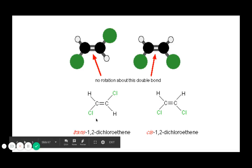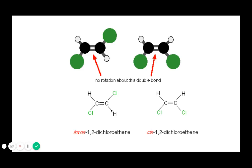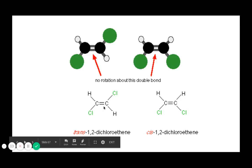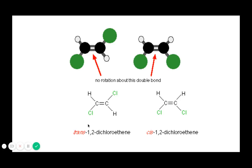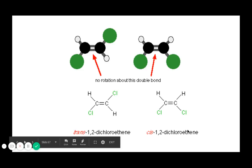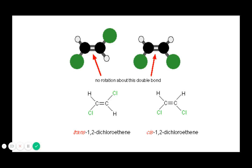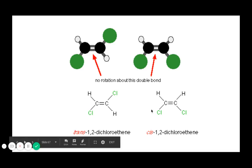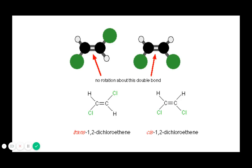Take 1,2-dichloroethene as an example. You can place the chlorine atoms in two ways: opposite sides of the double bond, giving trans-1,2-dichloroethene, or on the same side, giving cis-1,2-dichloroethene. These two compounds are actually different because their properties are greatly affected by their arrangement relative to the double bond. When the groups are opposite, we call it trans; when they're on the same side, we call it cis.